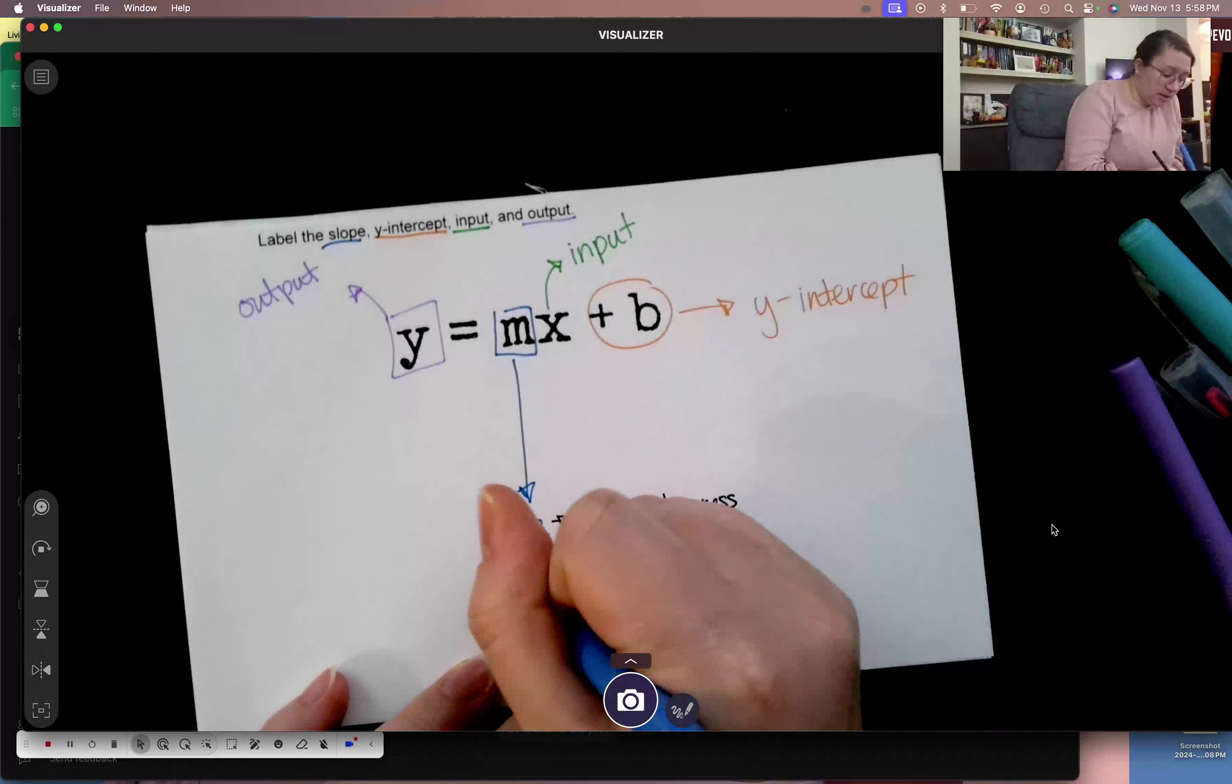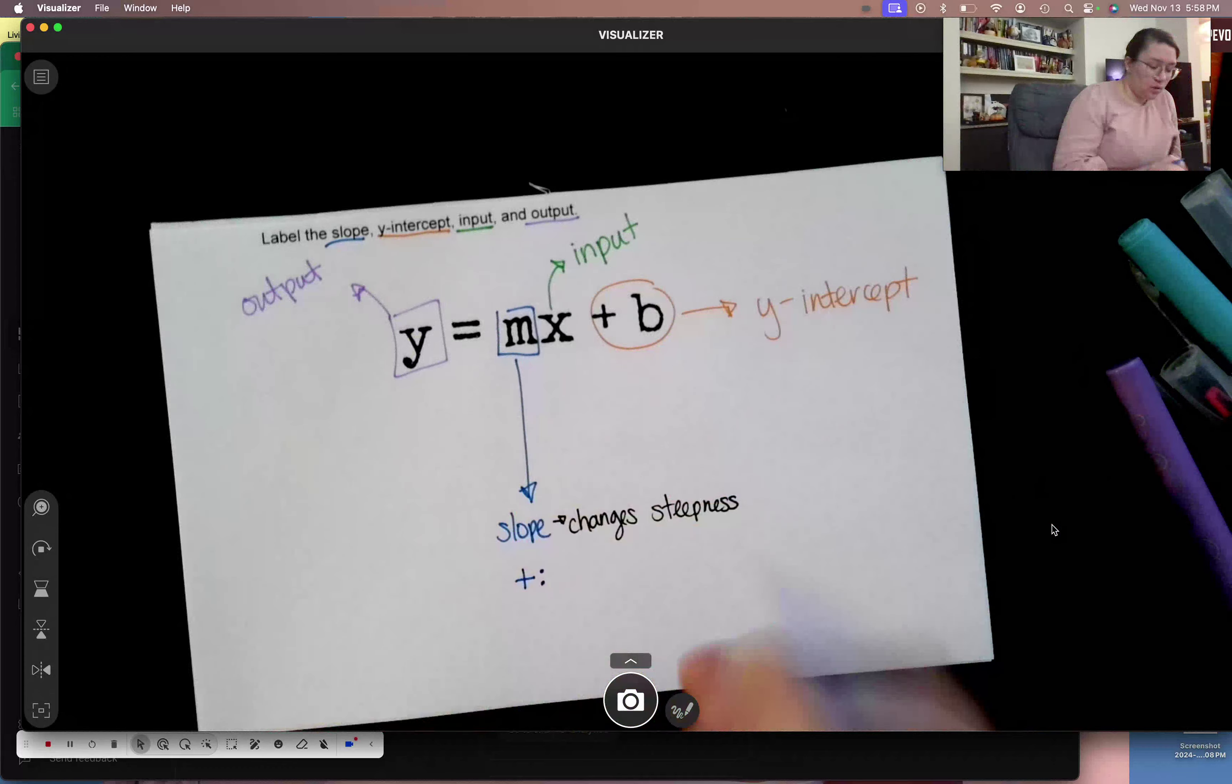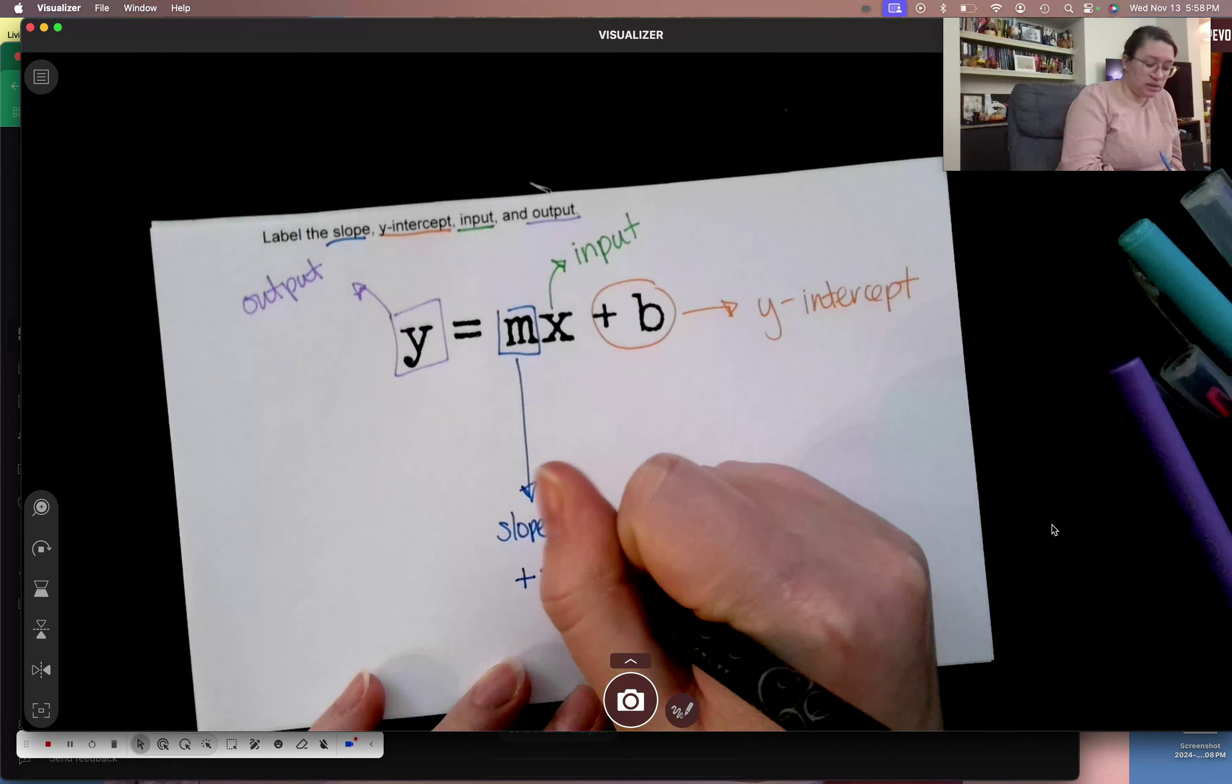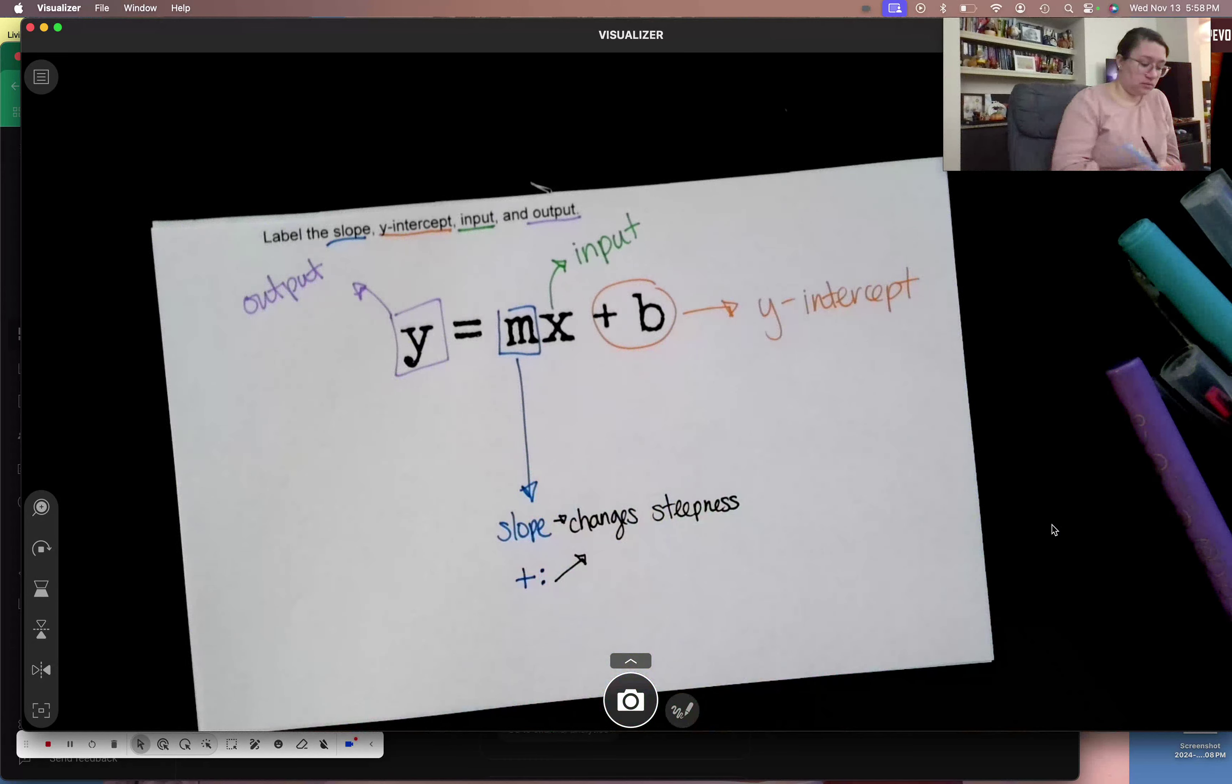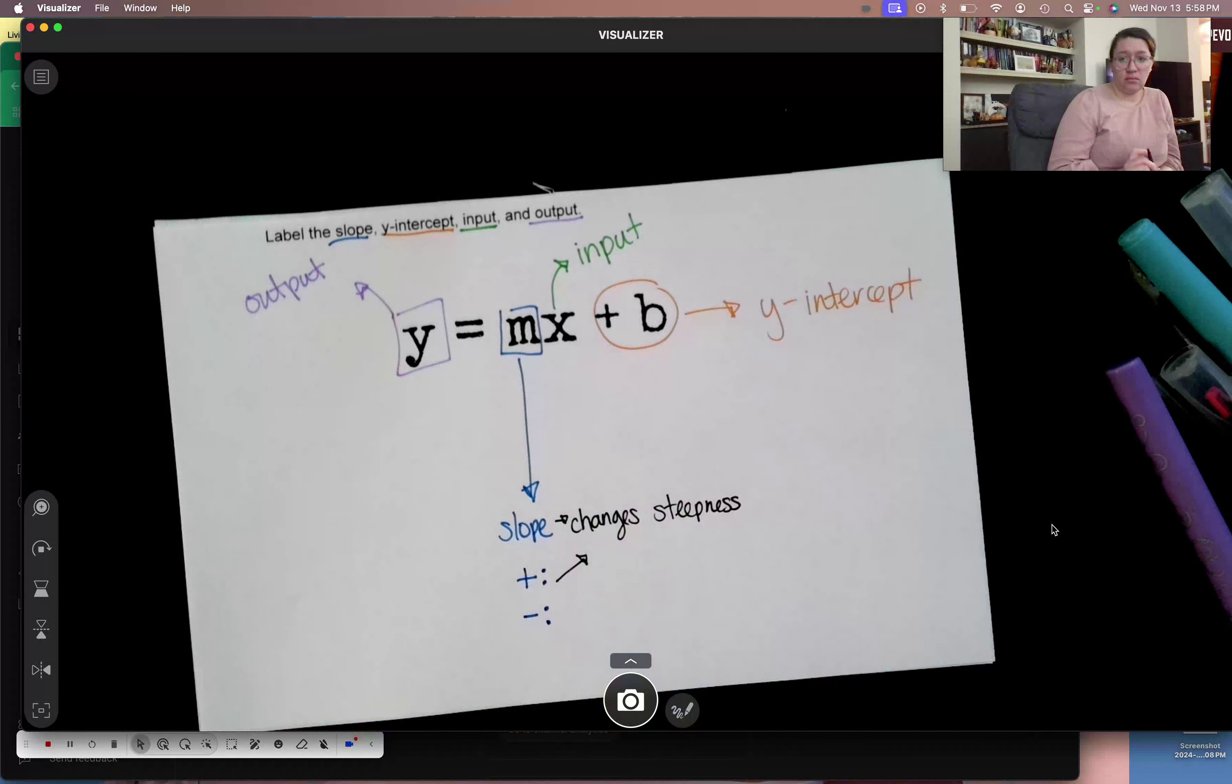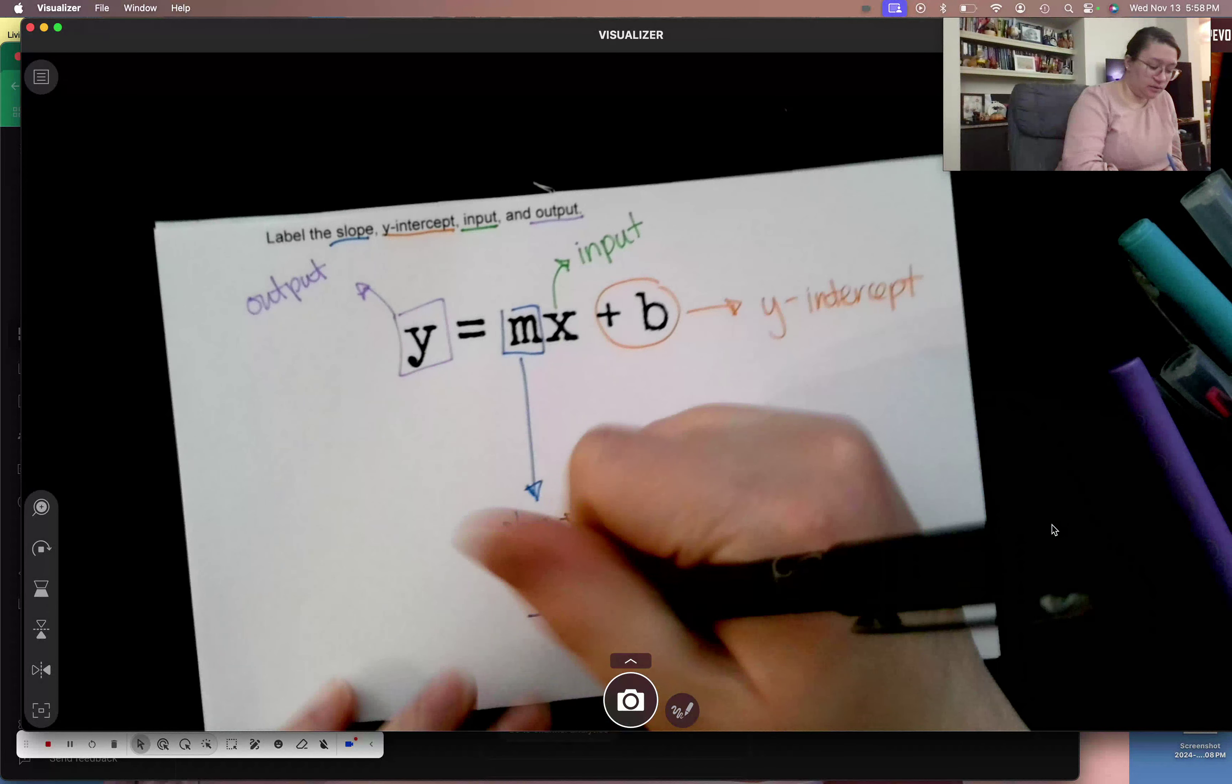If my slope is a positive number, what does my line look like? It increases from left to right. What does it look like if my slope is negative? It decreases from left to right.